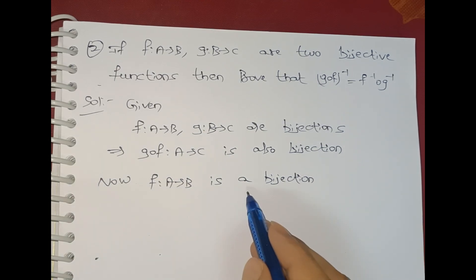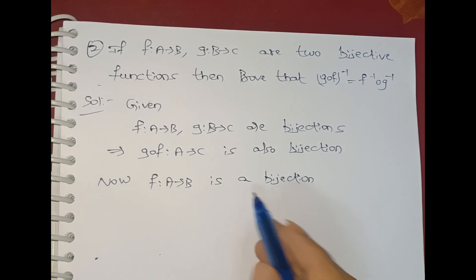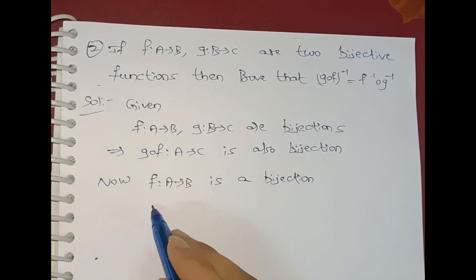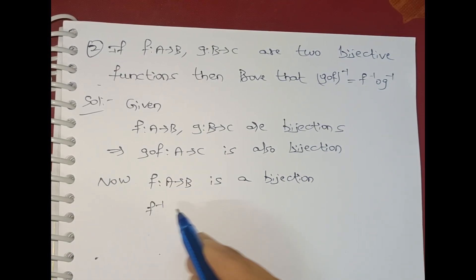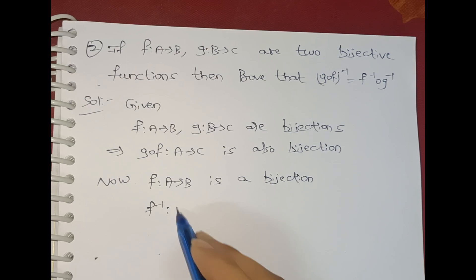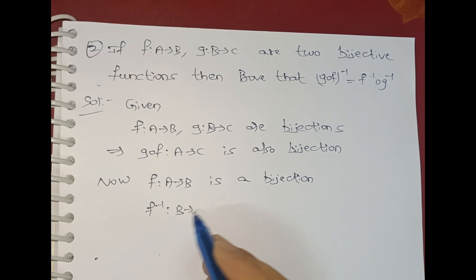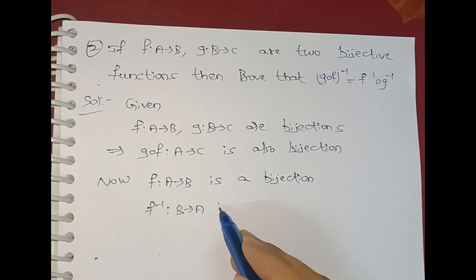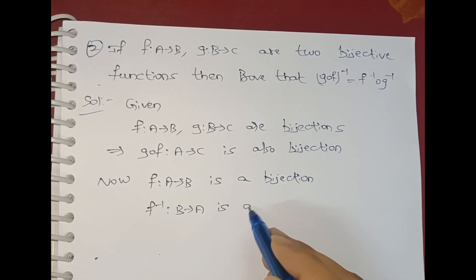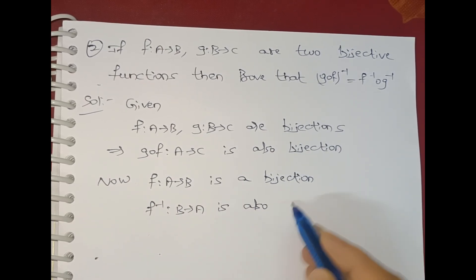Since it is a bijection, its inverse is also a bijection. Therefore, f⁻¹ mapping B to A is also a bijection.